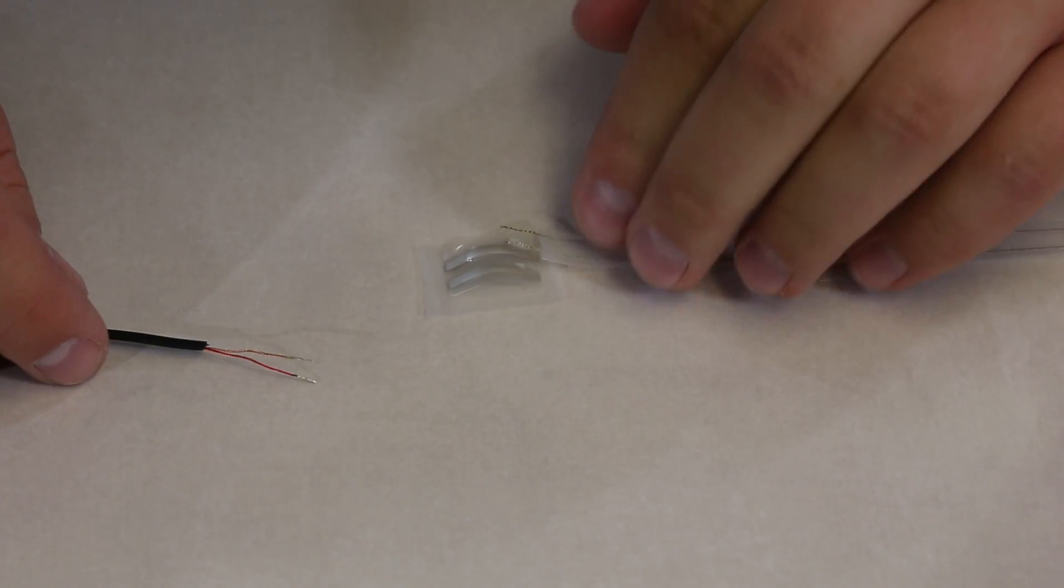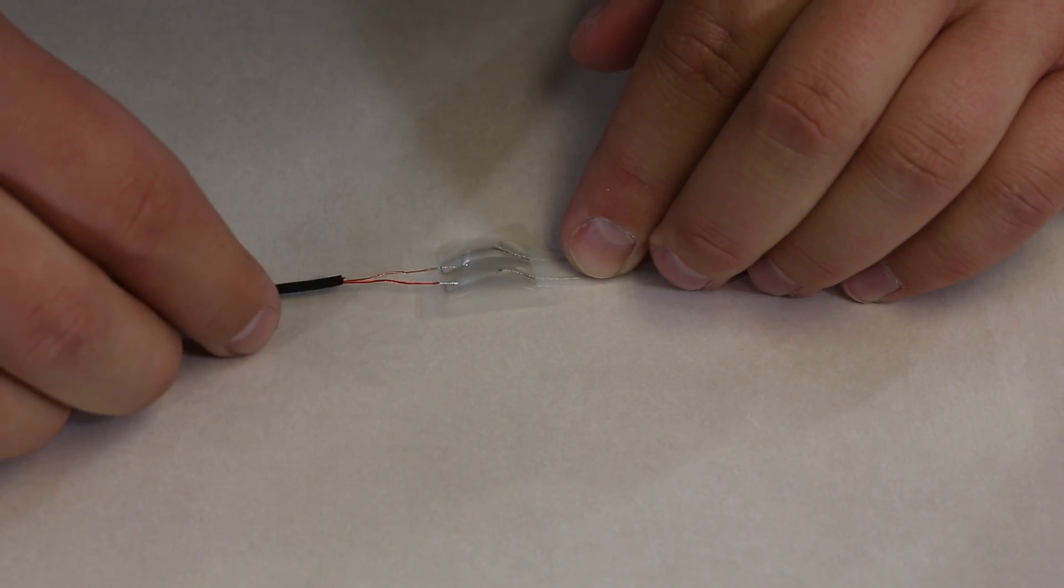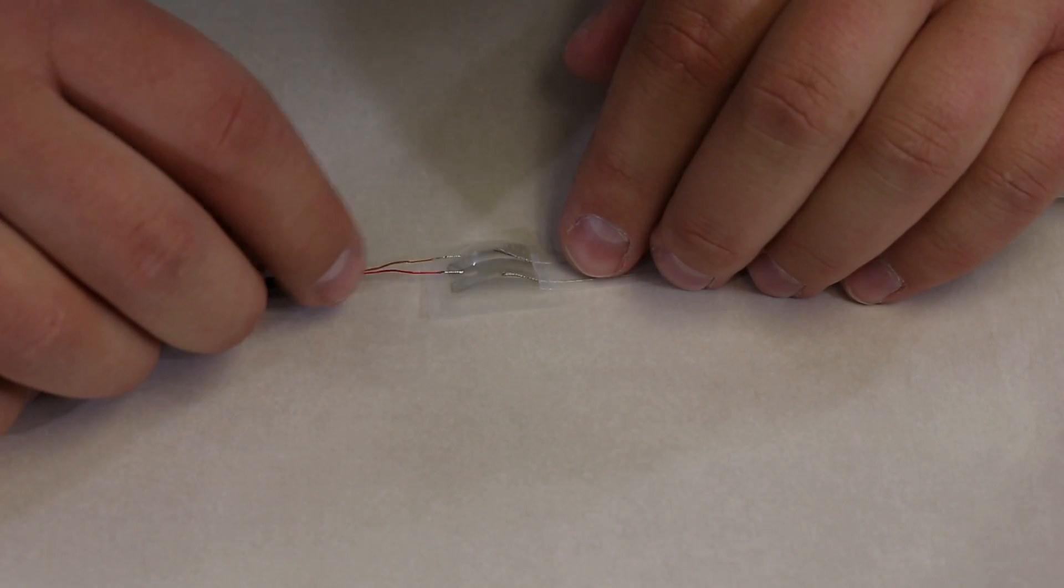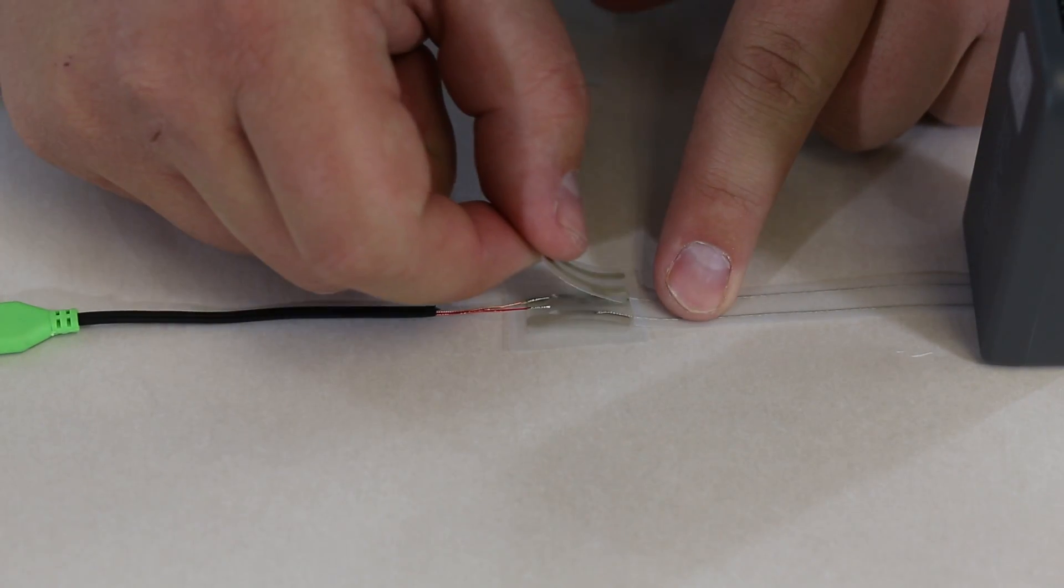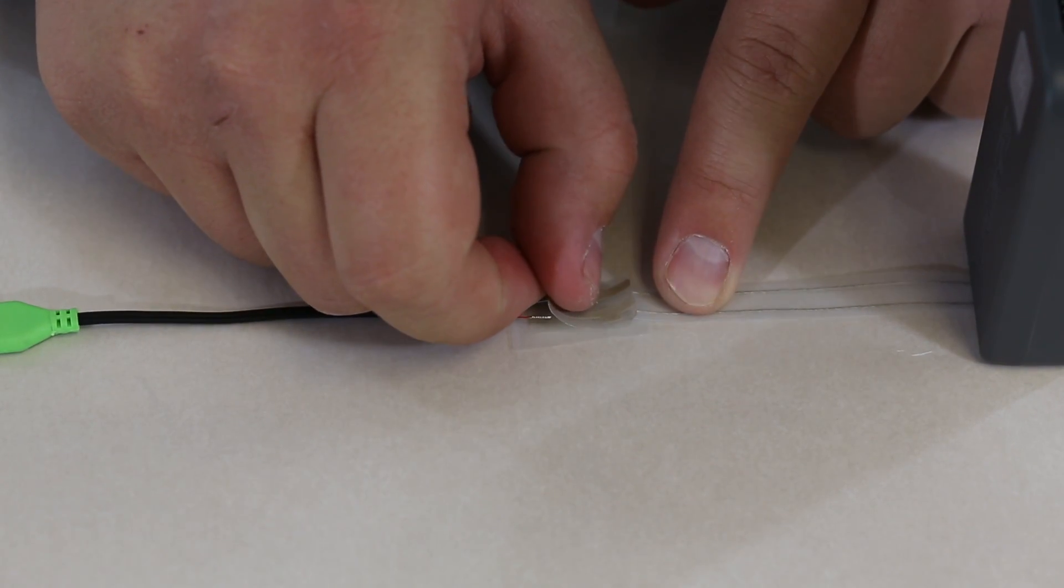Once you have these 2 in place, you're going to want to put down the exposed threads from the iron-on circuitry and the 2 exposed wires from the molex connector. Once you have those in place, they'll make a solid connection. You're going to put the other straight connector on top.